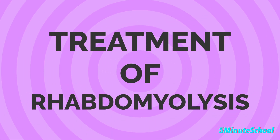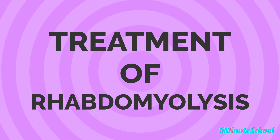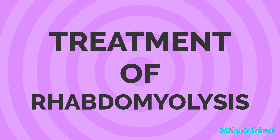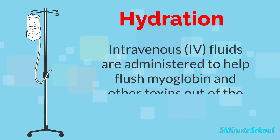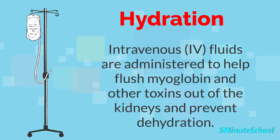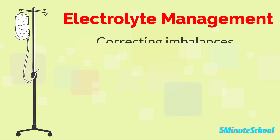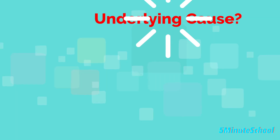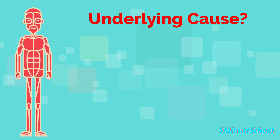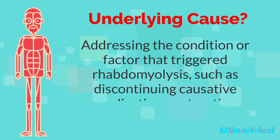In terms of treatment, there are a few things which need to be done to manage rhabdomyolysis, involving addressing the underlying cause and preventing further complications. Intravenous fluids are administered to help flush myoglobin and other toxins out of the kidneys and prevent dehydration. Electrolyte management is important — correcting imbalances, particularly hyperkalemia, to prevent cardiac complications. Treating the underlying cause involves discontinuing any causative medications or treating any infections.